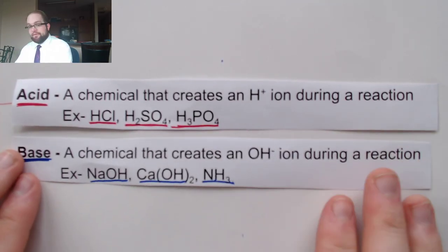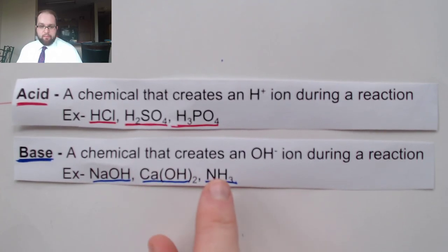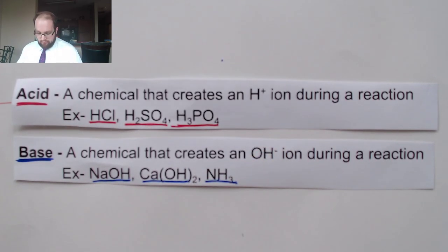Bases are also pretty easy to find in a chemical formula. They are chemicals that create an OH- during a reaction. You'll usually see that OH- in the formula. Now most of the time they will have the OH, but some bases are a little bit harder to identify because you don't always see the OH. So NH3 when it reacts with water will actually make the OH-.